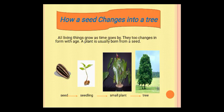Next — how a seed changes into a tree? Kaisi ek seed jo hai, woh tree mein change hoota hai. All living things grow as time goes by. Saari living things time ke saath grow karti hai. They do changes in form with age — woh apni age ke saath apni form ko change karti hai.